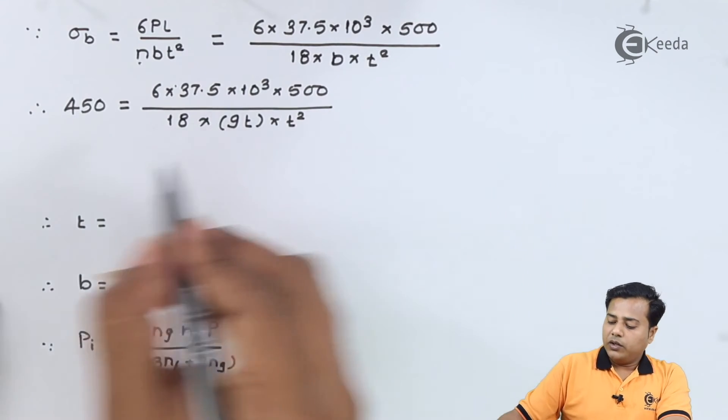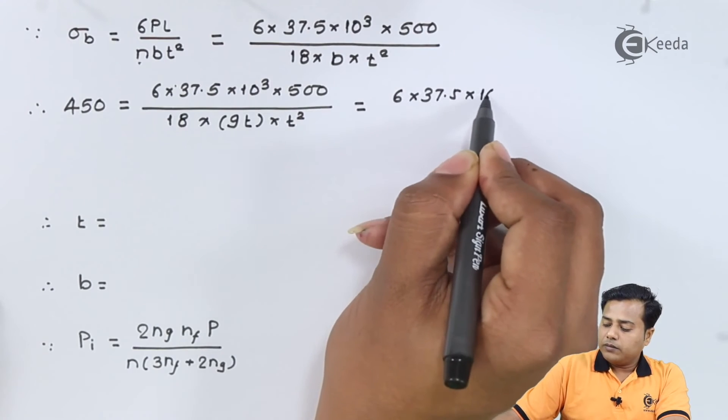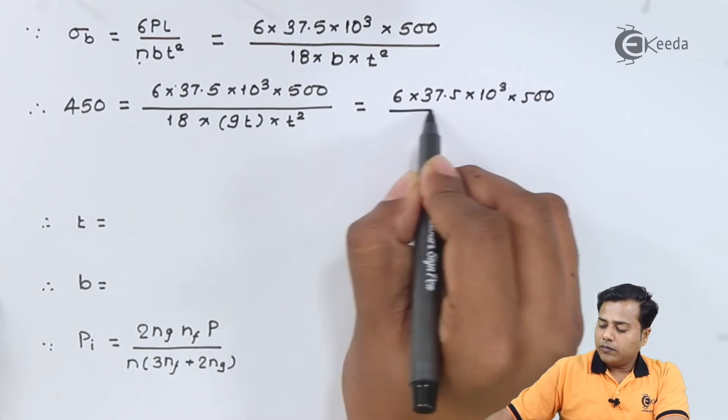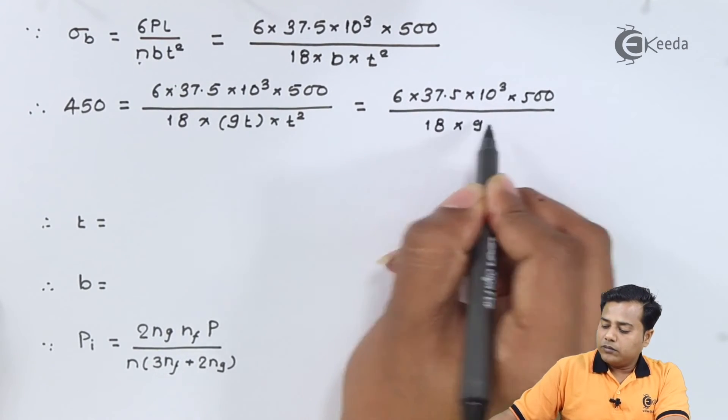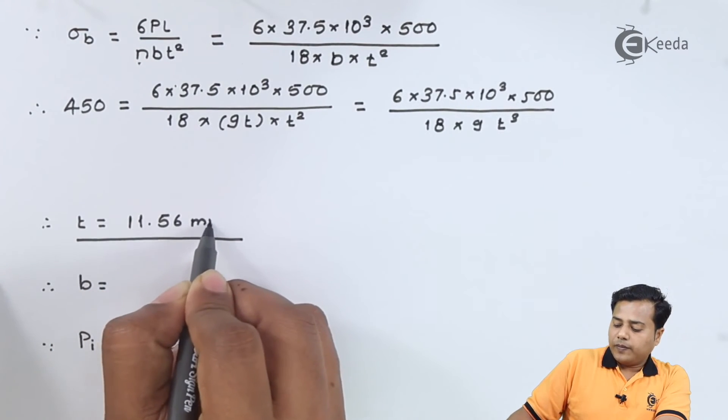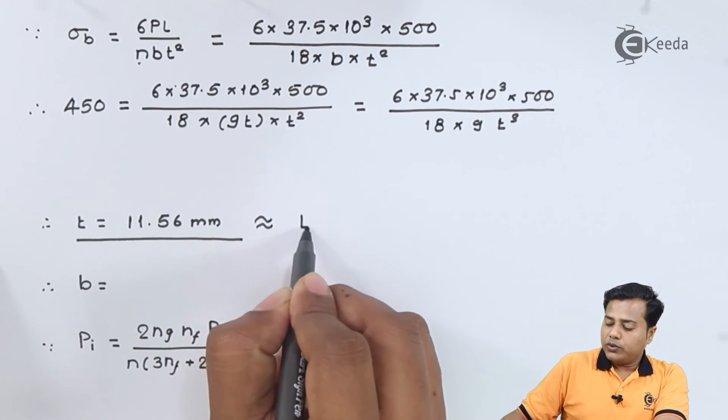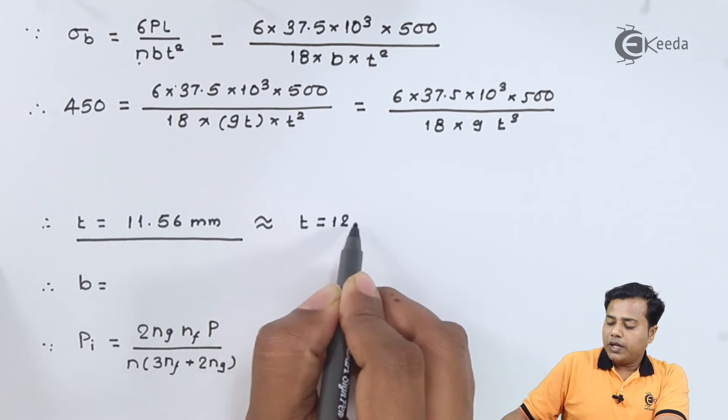So the only unknown that is left with us is somewhere equal to 11.56 millimeter. Let us go for a preferred value so that t becomes 12 millimeter.